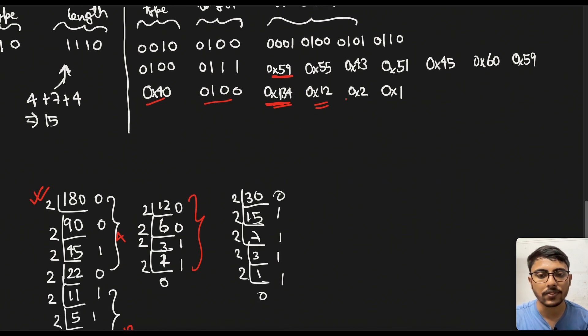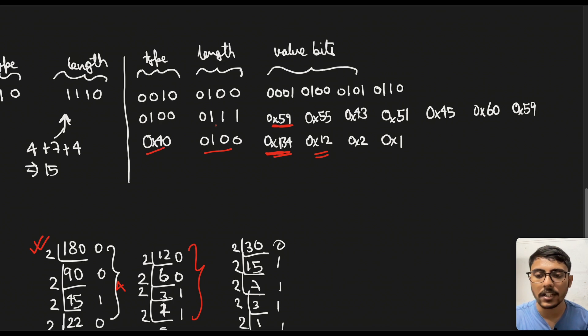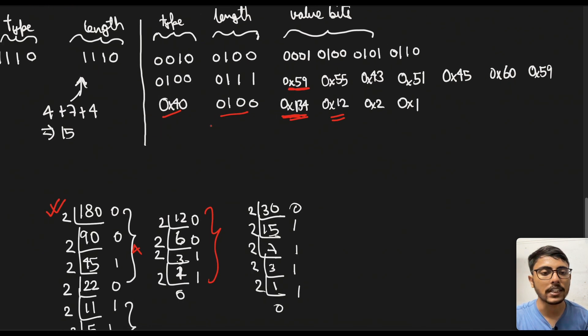Then you have 30 for the separate calculation. Then 2 and 1. So it is also written in hex. You can write it in binary as well. So that's it.